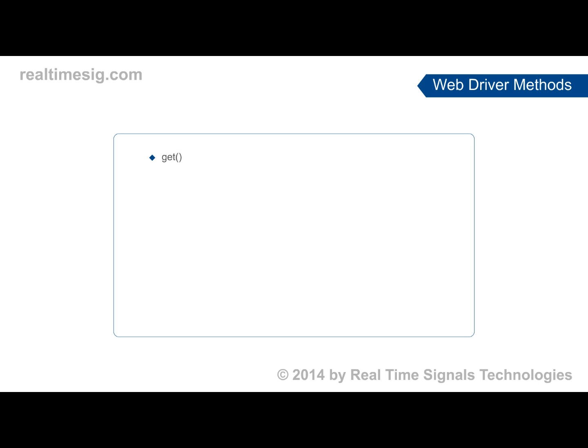Each method has its own use. The Get method is used to open the current URL in a browser. Close and Quit are used for closing the current instance of the browser. FindElement and FindElements are used for locating the elements on a browser.